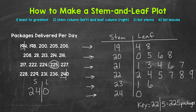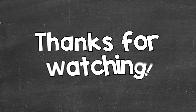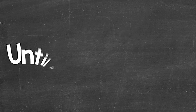Lastly, let's put a title up top: "Packages Delivered Per Day." So there you have it — that's how to make a stem and leaf plot. For this example, we worked with three-digit numbers. I hope that helped. Thanks so much for watching. Until next time. Peace.